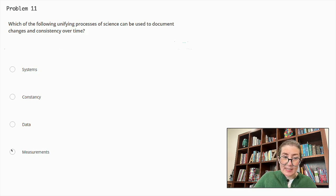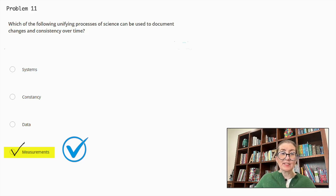The correct answer is measurements. This is correct because measurements allow scientists to quantify observations and document changes or consistency over time. By taking precise measurements at different points in time, scientists can track and analyze trends, patterns and variations.